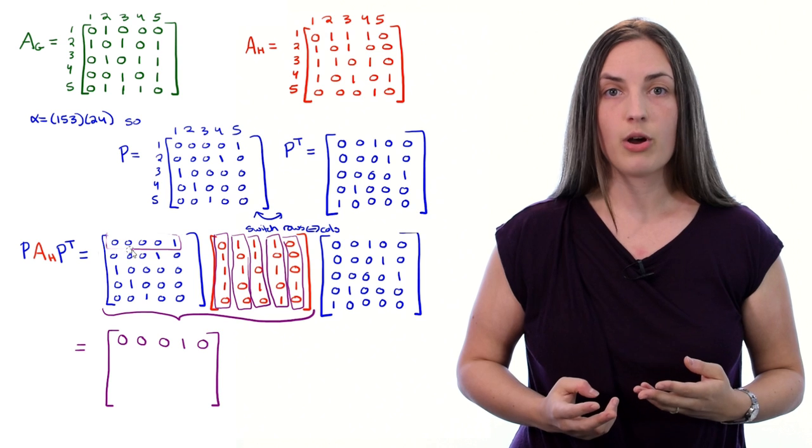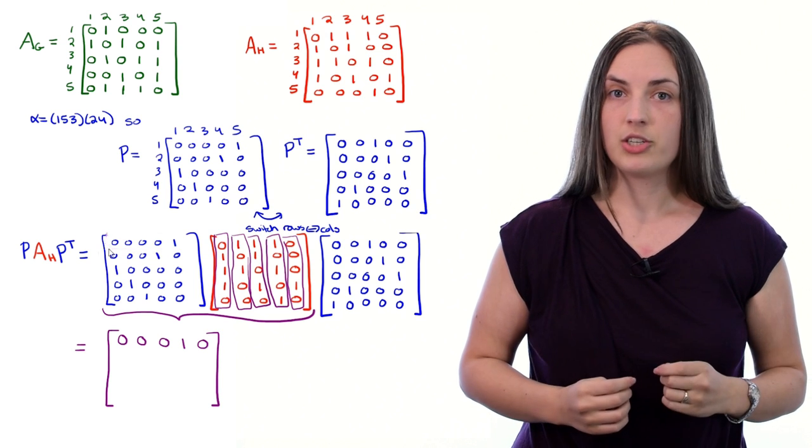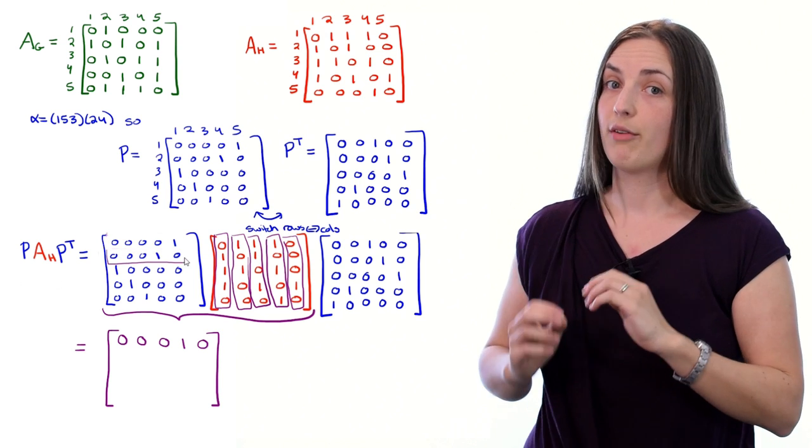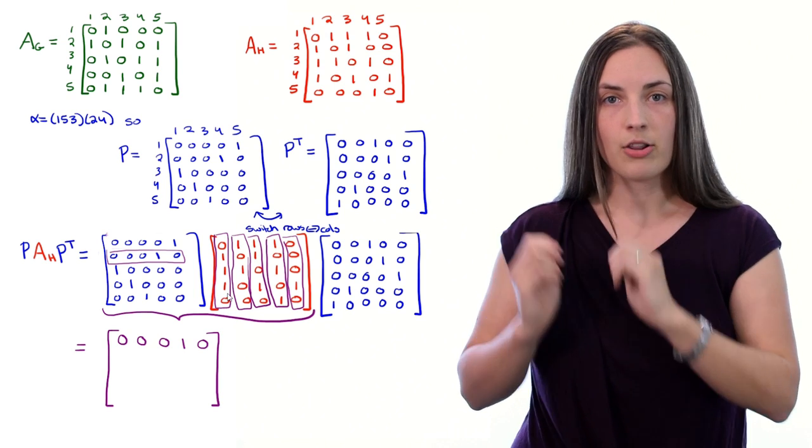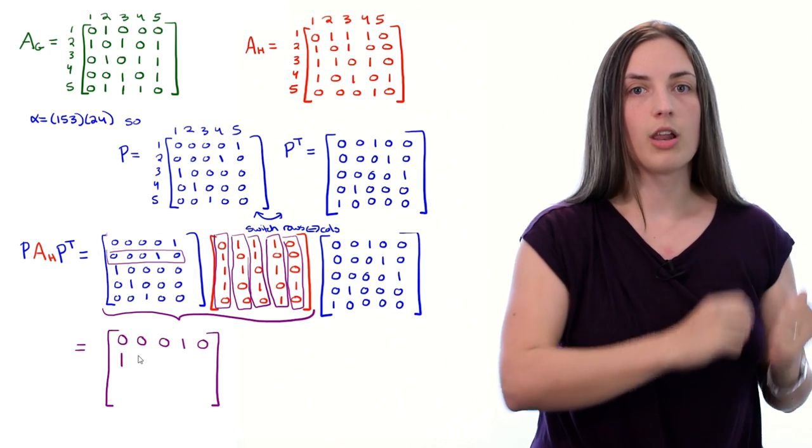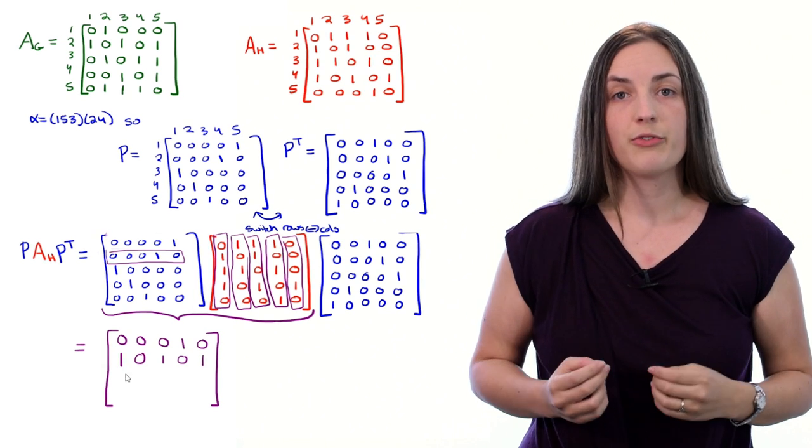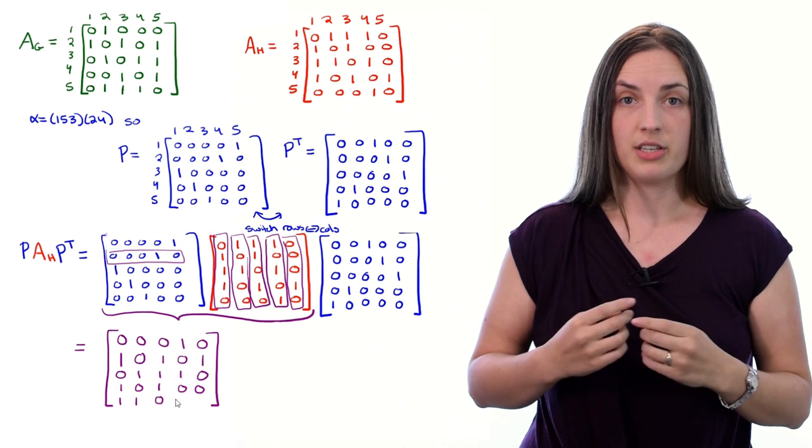Now we're done with the first row in the product. To figure out the second row, we just repeat this procedure, but now looking at the second row of the first matrix, and again looking into every individual column of the second matrix. Once we're finished calculating the product of these two matrices, we are not done.